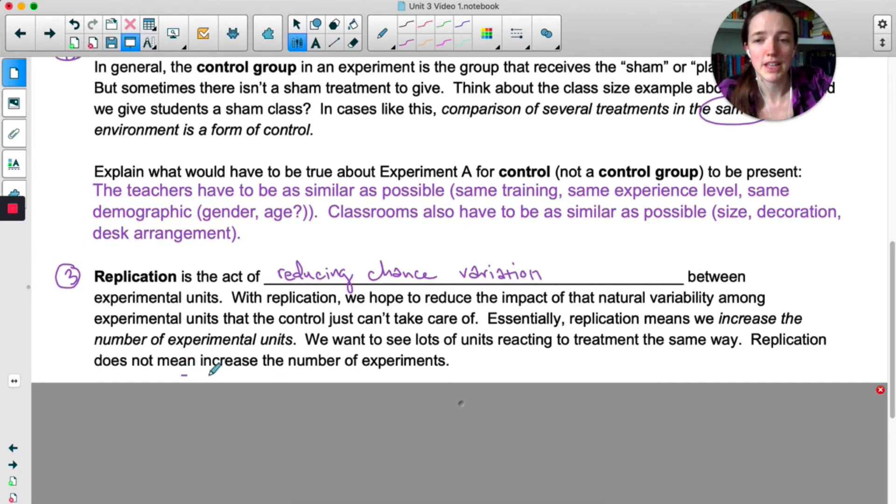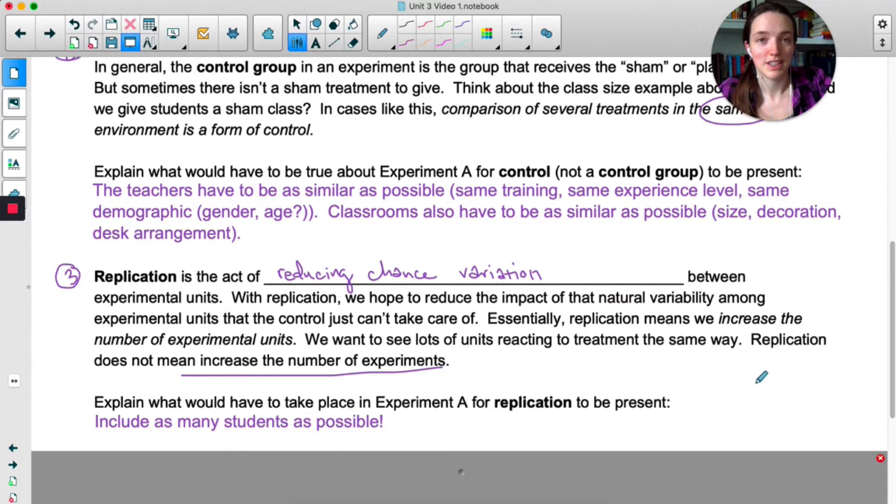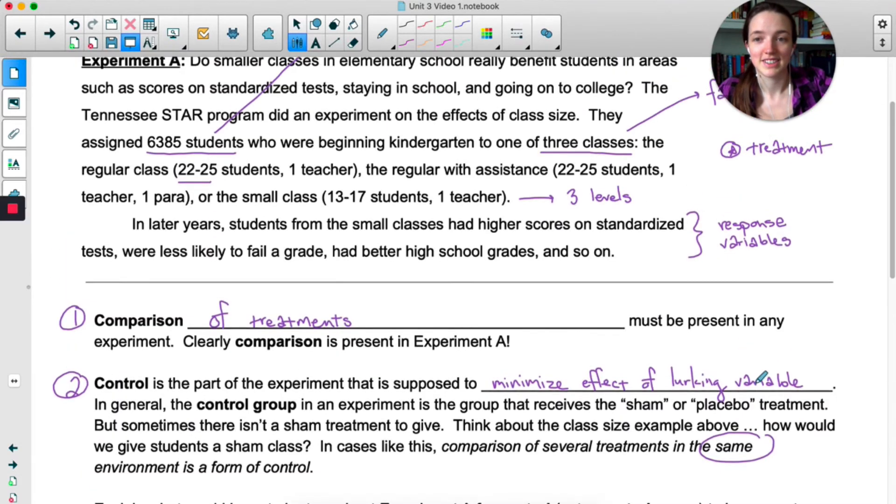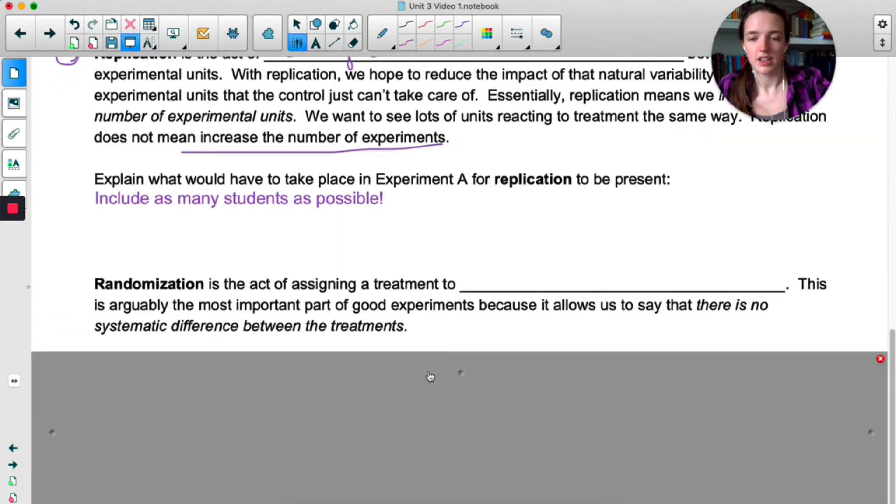It does not mean that we increase the number of experiments. We're not doing this experiment 100 times. It means we want to get as many subjects as possible in the experiment. So for Experiment A, in order to have replication be present we would want to include as many students as possible. I think they have like 6,000 some students. That's a lot.